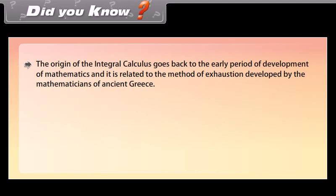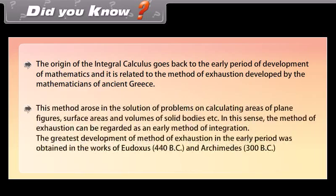Did you know? The origin of integral calculus goes back to the early period of development of mathematics, and it is related to the method of exhaustion developed by mathematicians of ancient Greece. This method arose in the solution of problems on calculating areas of plane figures, surface areas, and volumes of solid bodies. In this sense, the method of exhaustion can be regarded as an early method of integration. The greatest development in the early period was obtained in the works of Eudoxus (440 BC) and Archimedes (300 BC).